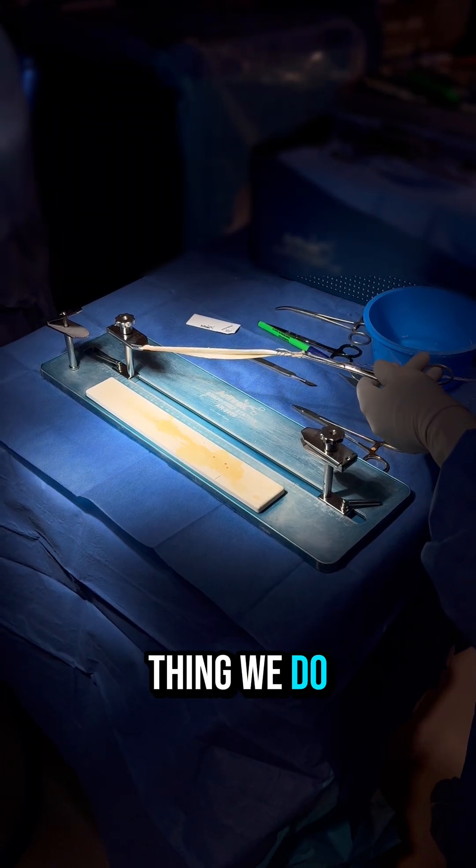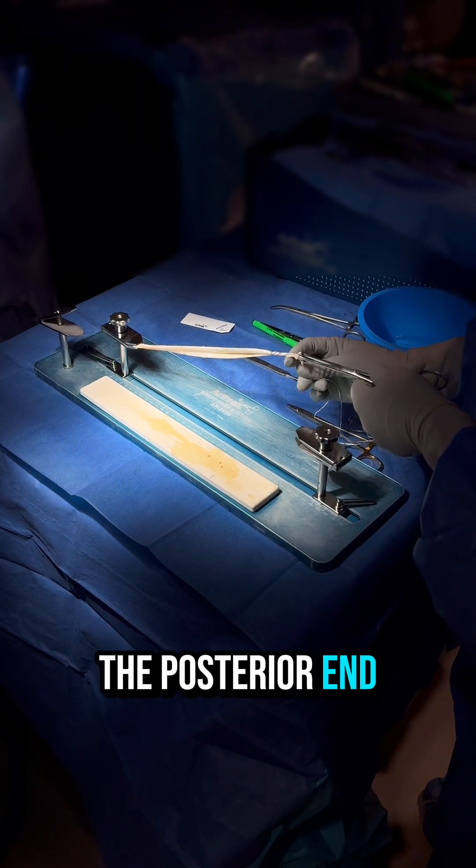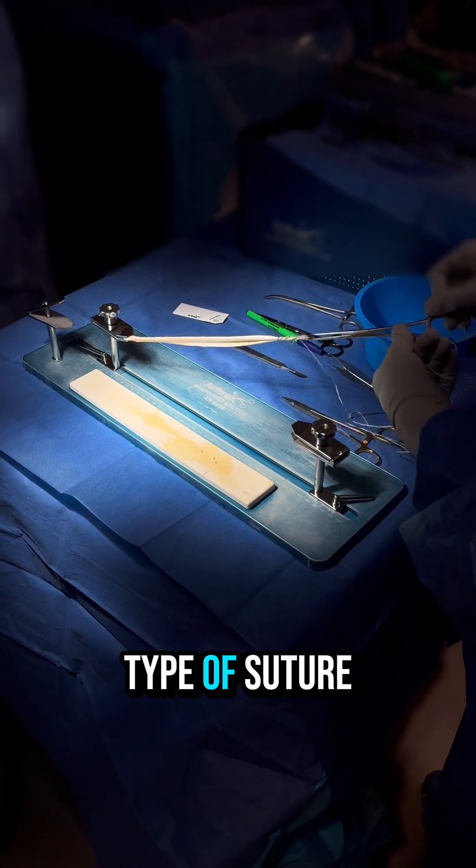The first thing we do is whip stitch the posterior end of our allograft using a specific type of suture.